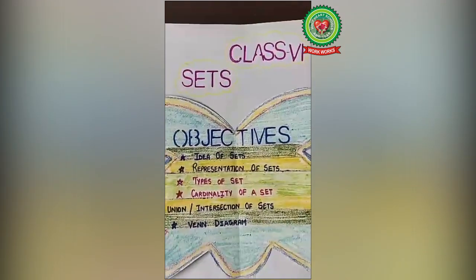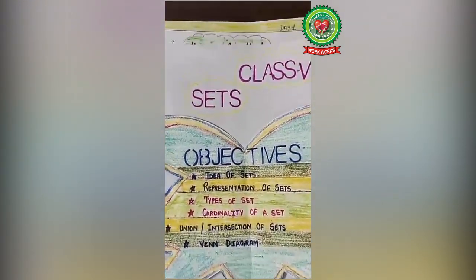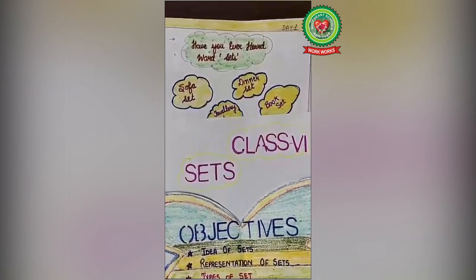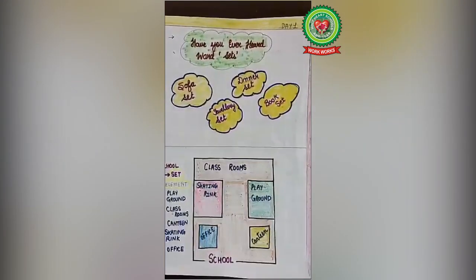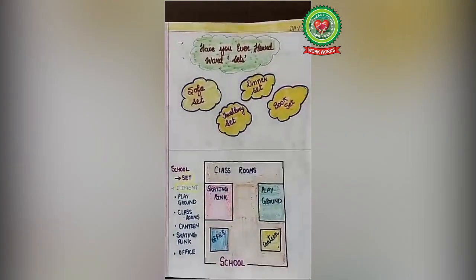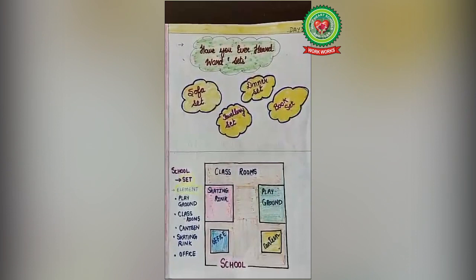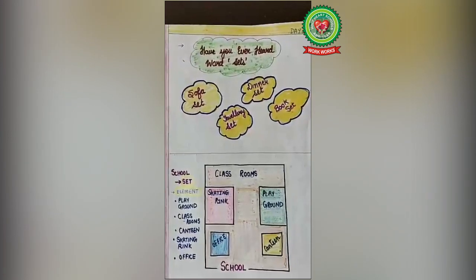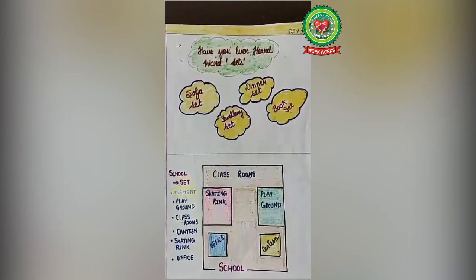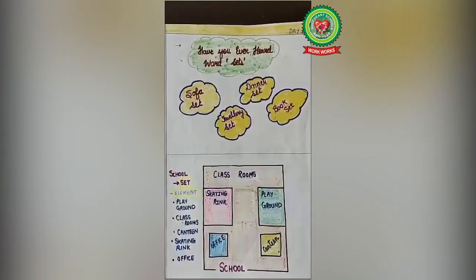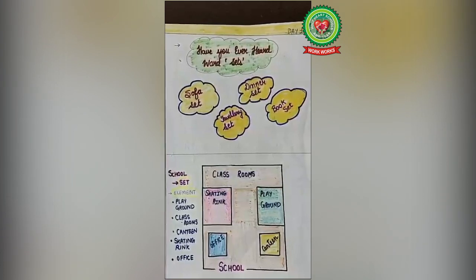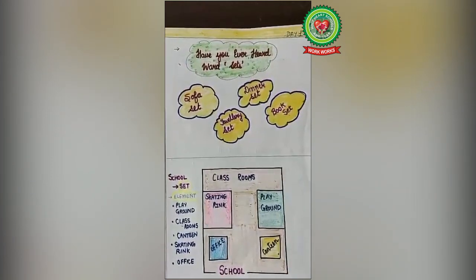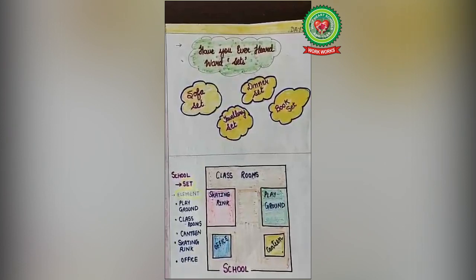Before starting, I would like to ask you: have you ever heard the word 'sets'? Sofa set, jewellery set, dinner set, book set. In a sofa set there are sofas and a table. In a jewellery set there are rings, bracelet, earrings, necklace, etc. In a dinner set there are plates, bowls, glasses, spoon, etc. In a book set there are different types of books. That means everything is well defined in a set.